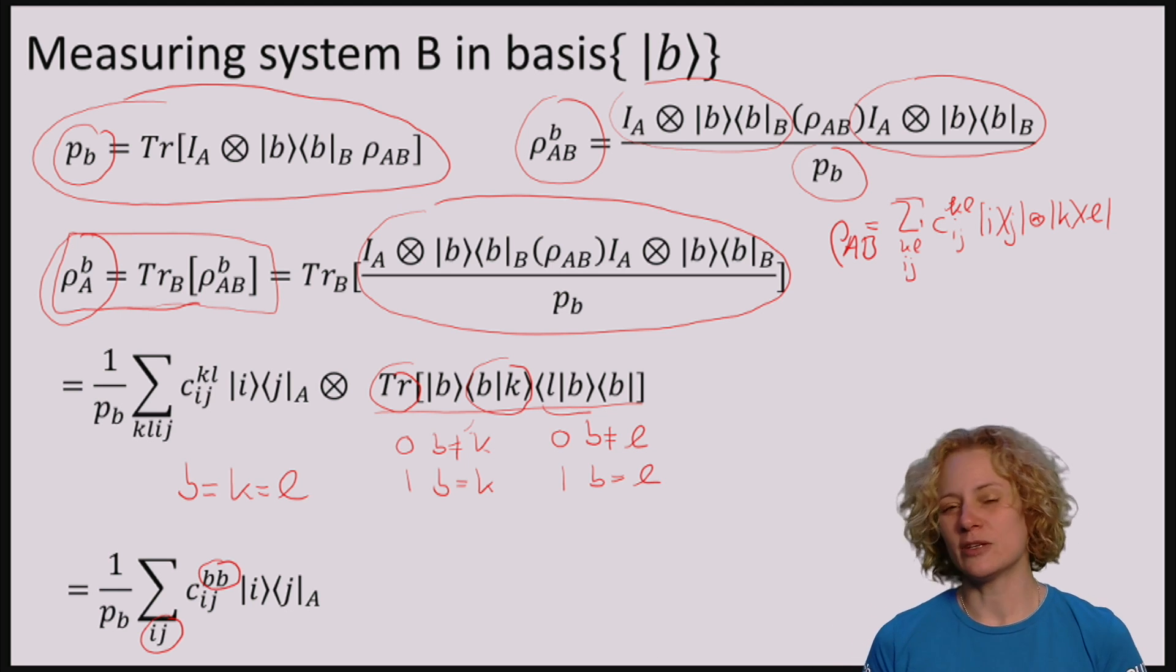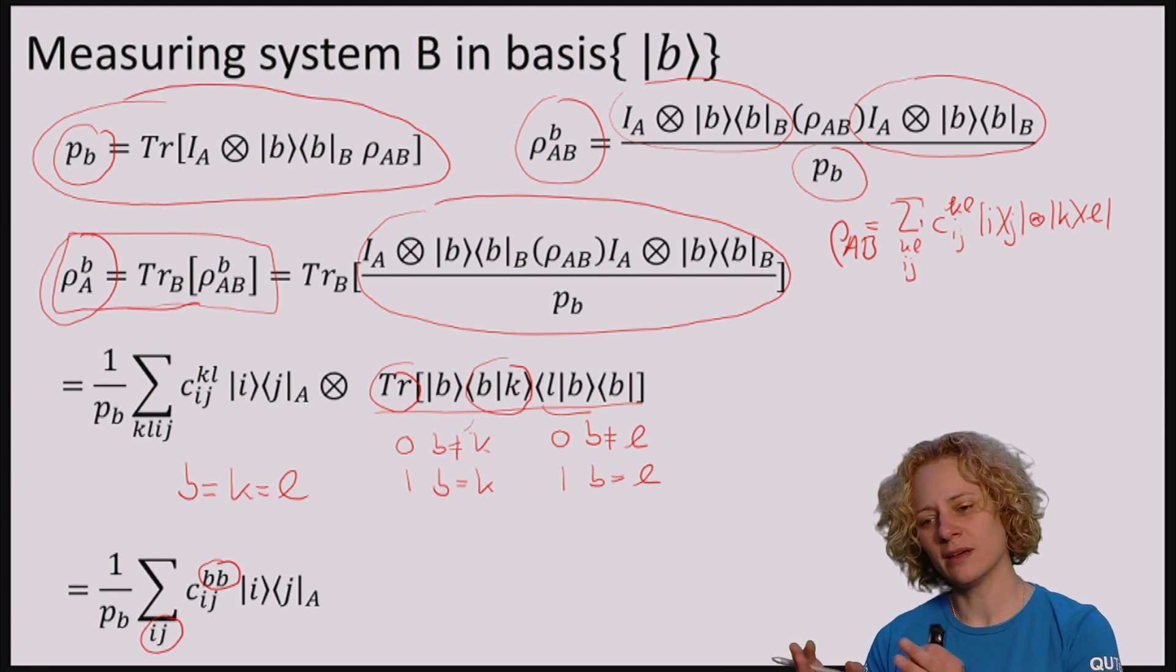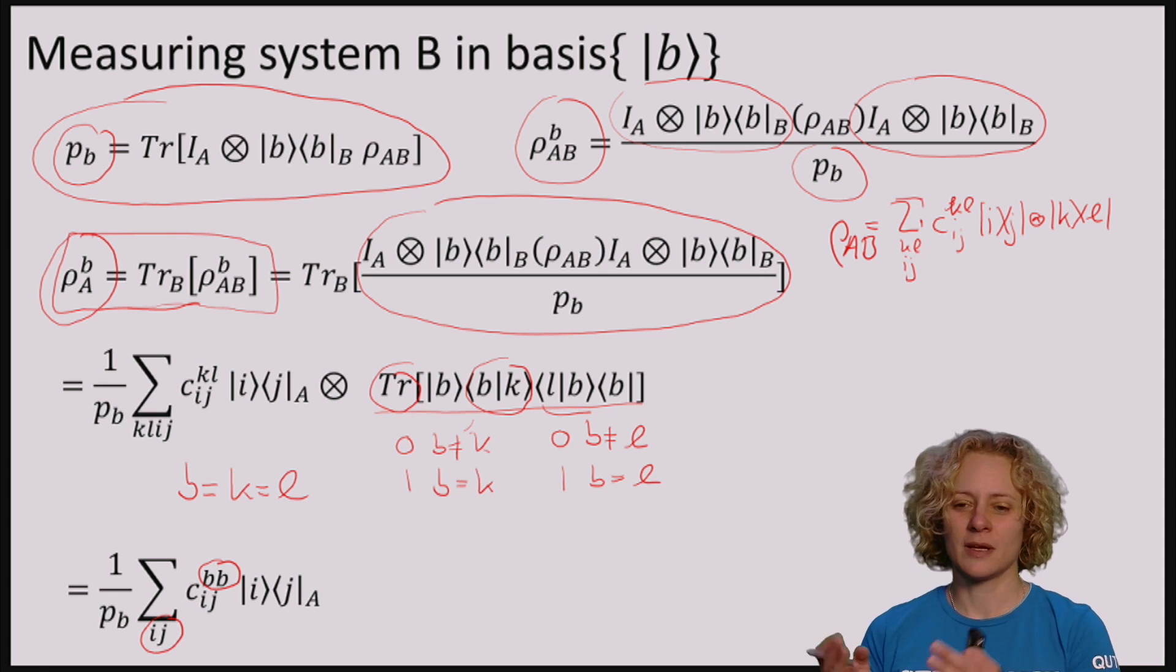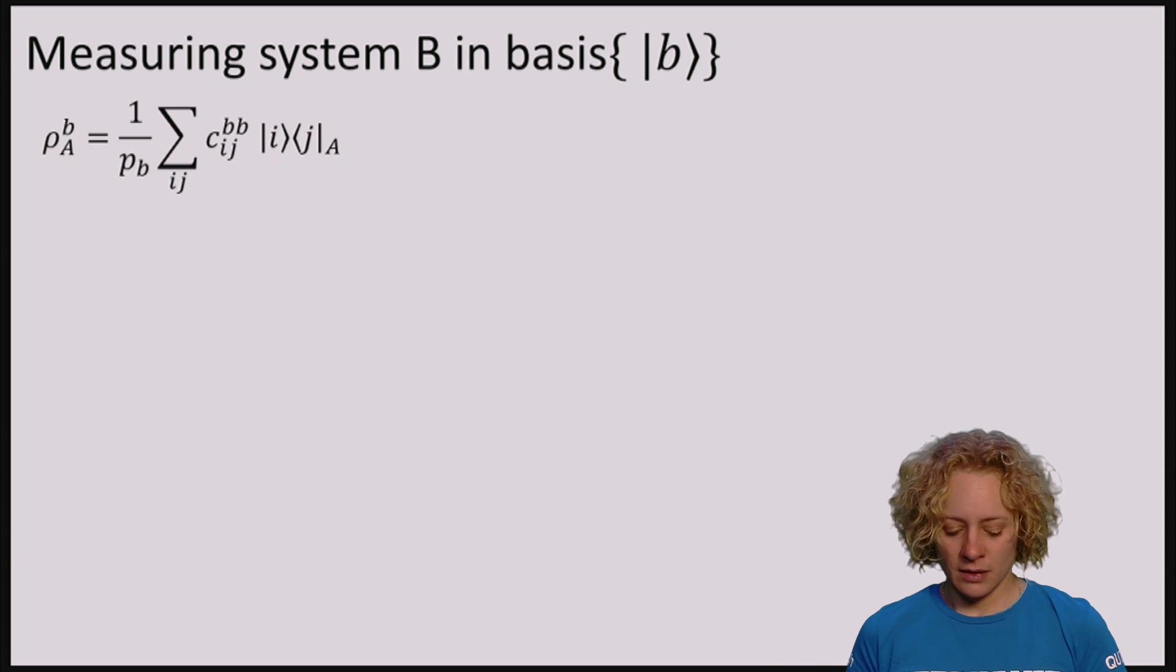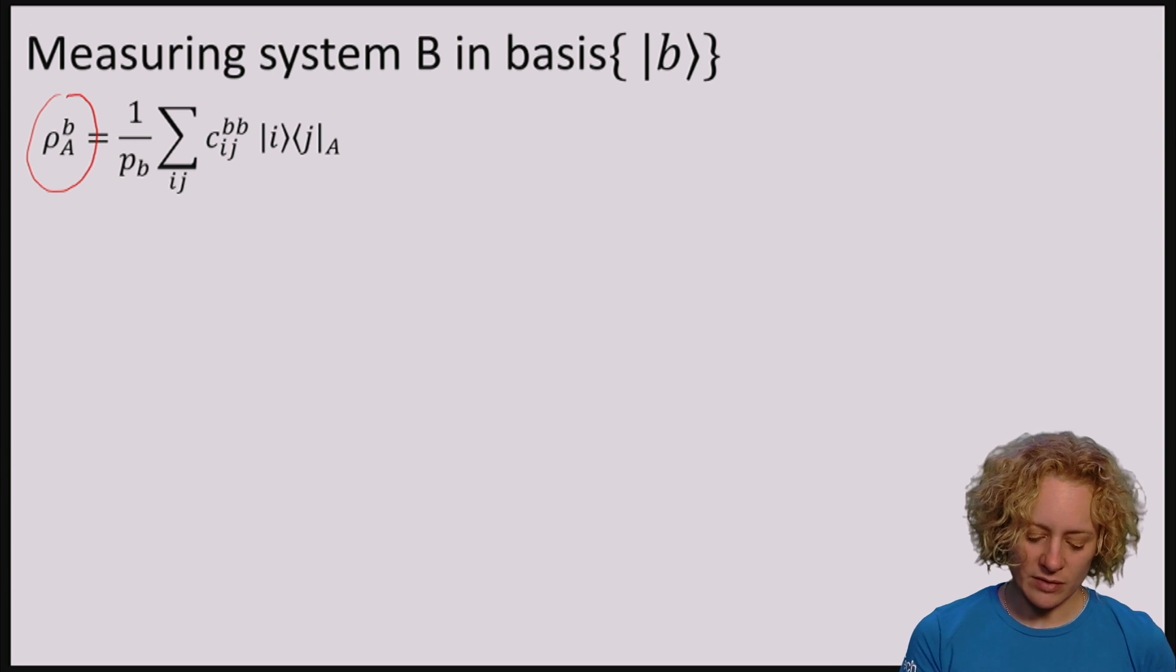So this would be the reduced state on A. If I measure system B, I obtain outcome B, and I look at the post-measurement state.